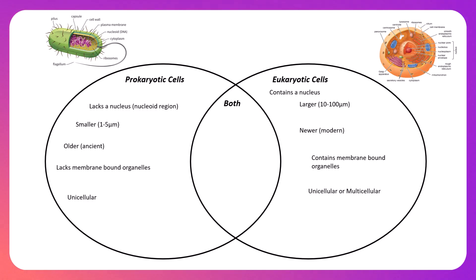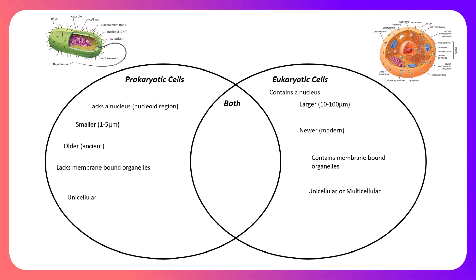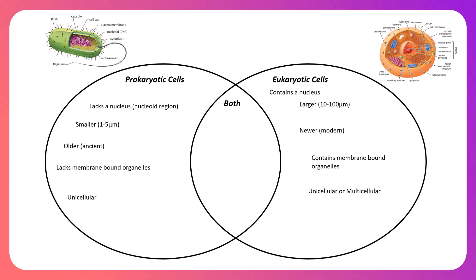Prokaryotic cells only live unicellularly, while eukaryotic cells can exist unicellularly or multicellularly. When prokaryotic cells live in colonies or infect a host, that is still not a multicellular organism — it's a group of unicellular organisms in close proximity. Thinking back to ecology, that would be a population of single-celled organisms.